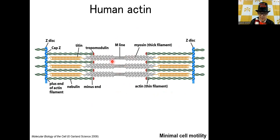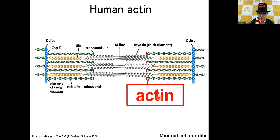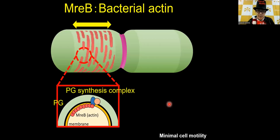The thick filament is composed of myosin protein, and the thin filament is mostly composed of actin protein. Actin is the most abundant protein in muscle. In bacteria, what is the role of MreB? It is not related to motility in general — in organisms other than Spiroplasma, it is not involved in cell motility. Instead, this protein is responsible for guiding the synthesis of the cell wall, recruiting the synthesis machinery to the right position where the cell wall is synthesized.